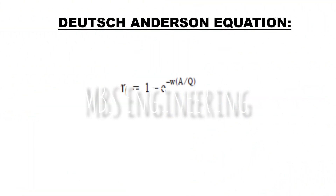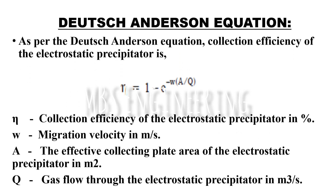Next, we will understand the Deutsch-Anderson equation and how it helps in the electrostatic precipitator. As per the Deutsch-Anderson equation, the collection efficiency (η) equals one minus e to the power of negative migration velocity (ω) multiplied by effective collecting plate area (A), divided by gas flow (Q). Here, η is collection efficiency in percent, ω is migration velocity in meters per second, A is effective collecting plate area in square meters, and Q is gas flow in cubic meters per second.